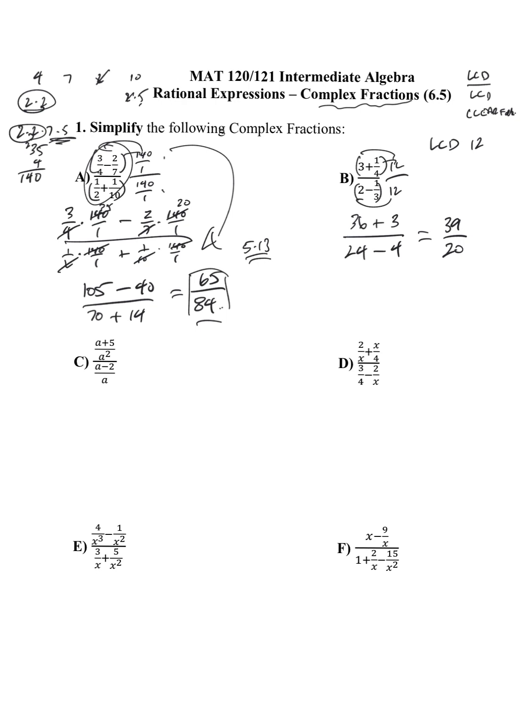So again, that might be the final answer. 39 is 3 times 13. And none of these go into 20. So that, again, tells me that that final fraction is simplified. So this complex fraction simplifies into that fraction down there. So there you go. There's our little LCD trick.